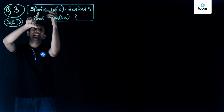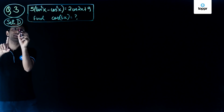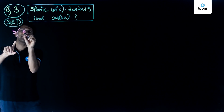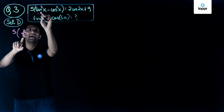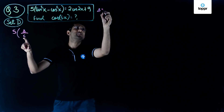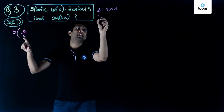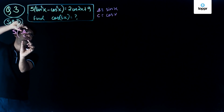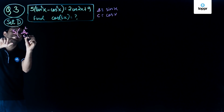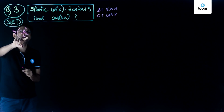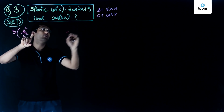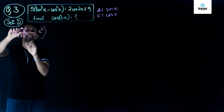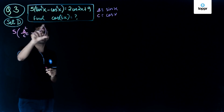Firstly, note that tan can be written as sin upon cos. If I replace sin of x by a small letter s and cos of x by c, then tan of x is sin of x upon cos of x. Because there is a square, I get sin squared over cos squared. The second term is minus cos squared of x, which is minus c squared. So substituting sin of x by s and cos of x by c, I get the left hand side.